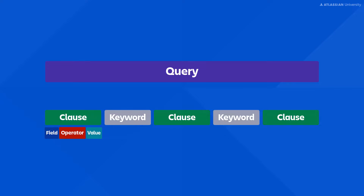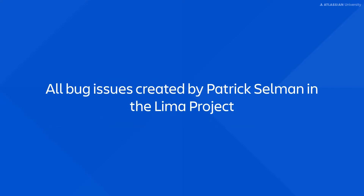Let's try this out. Say you wanted to see all the bug issues your teammate Patrick Selman reported within a project called Lima. In the query, we'll need three clauses: one for the reporter Patrick, another to define which project we're looking in, and a third for the issue type, bug.